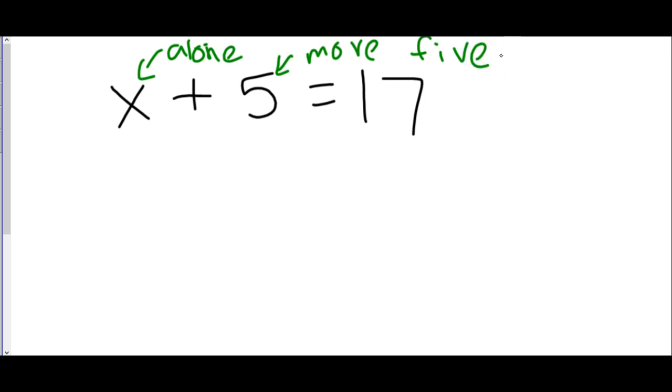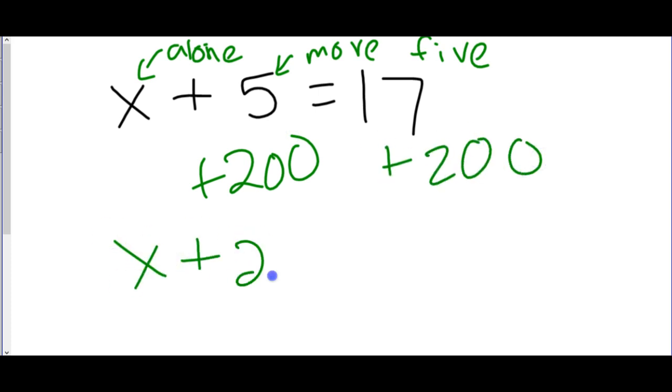Now I really can do whatever I want to an equation. So I'm going to write some stuff down that if you're writing notes along with this, you should not write down. I really, if I wanted to, I could add 200 as long as I do it to the other side. The only problem is if I add 200, that's not going to help me get x alone. It just changes the 5 to a 205. So that wasn't helpful to me.